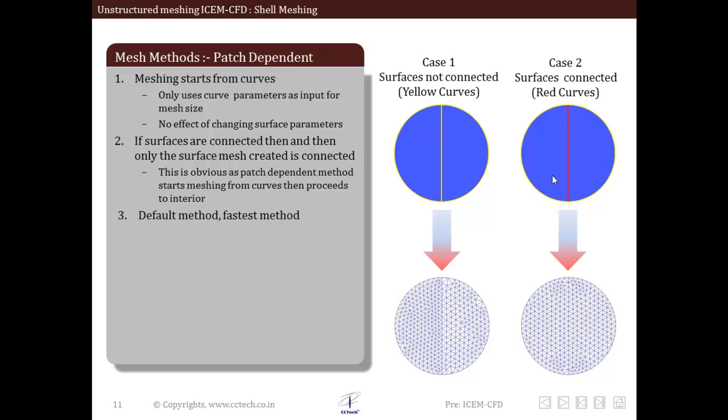But red colored diagonal in case two indicates that two semicircular surfaces are connected. Now observe the mesh. One can see that surface mesh on both surfaces are not connected in case one, while those in case two are connected. As you can see these are not connected meshes, so they are basically different mesh, but in case two it is a connected mesh.